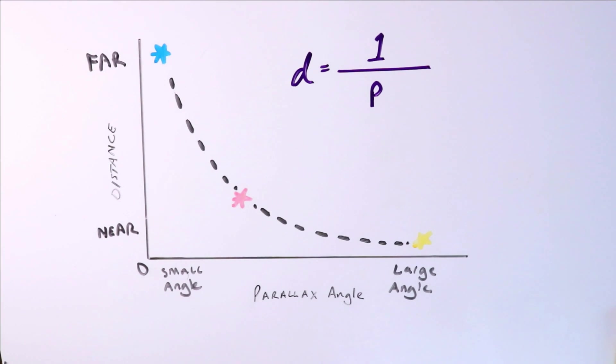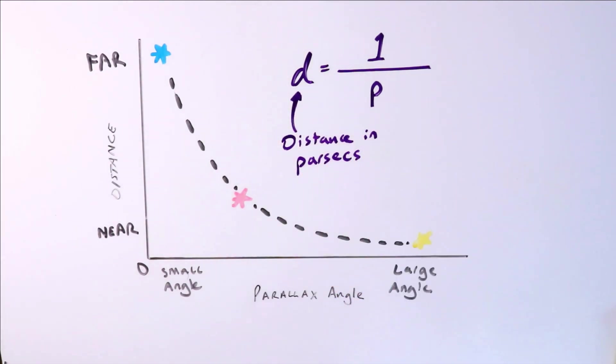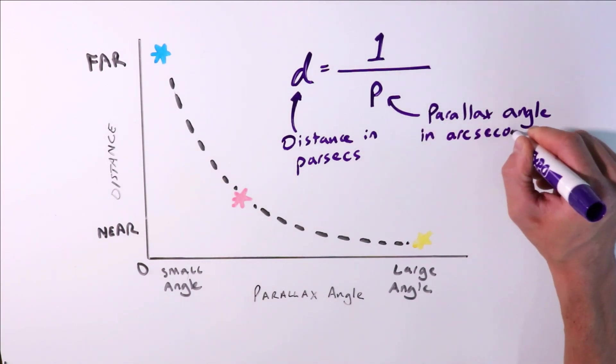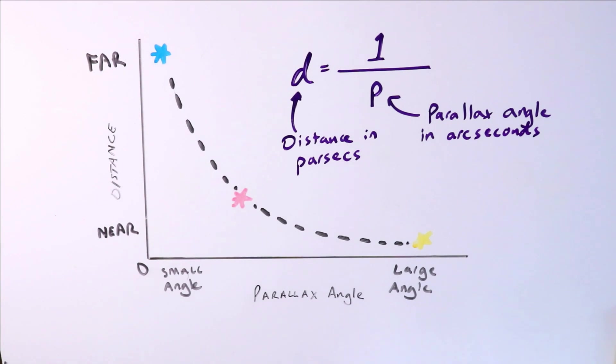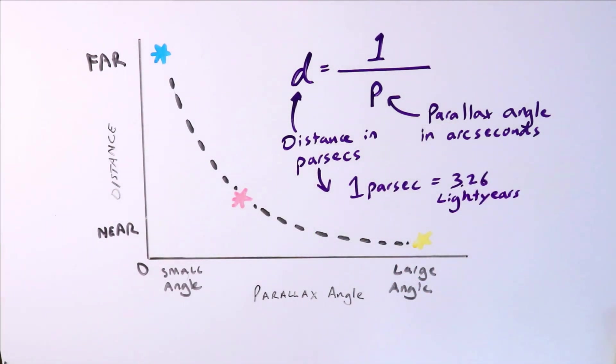d equals 1 divided by p, in which d is the distance in parsecs, and p is the parallax angle measured in arcseconds. A parsec is about 3.26 light-years. Parsecs and arcseconds are used in stellar parallax because they help avoid having to do trigonometry and dealing with clunky units such as miles and degrees. Let's do a worked example of how to use the parallax formula.